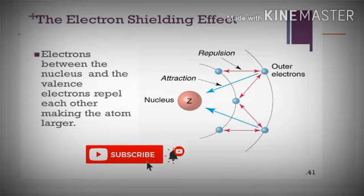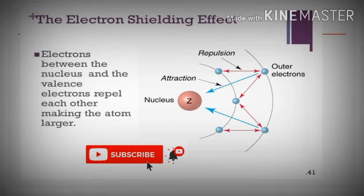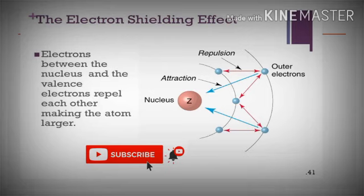The valency shell electrons are outer shell electrons attracted towards the nucleus. At the same time, the inner shell electrons repulse the valency shell electrons — this is called shielding effect. See the diagram. The nucleus attracts the outer shell electrons towards itself. At the same time, the inner shell electrons repulse the valency shell electrons. If the inner shell electrons increase, then the shielding effect will increase, so the repulsion on the valency shell electrons is more, and the nucleus attraction will decrease. This is called shielding effect.